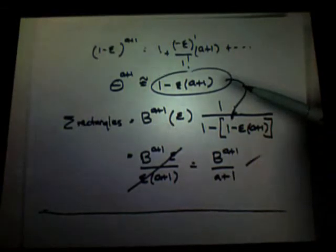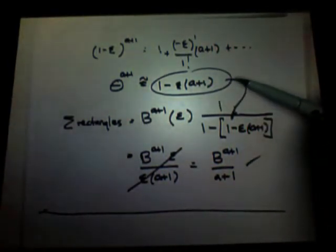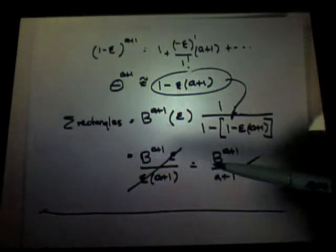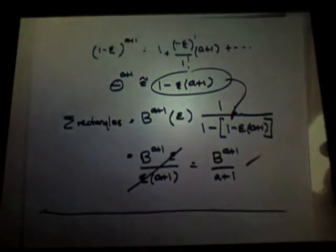But if epsilon is small, epsilon squared is even smaller, right? So within any desired accuracy, let epsilon go to zero. And basically, he was anticipating an awful lot. And maybe if he hadn't been a lawyer and had been a full-time mathematician, he would have been famous. He was certainly integrating power functions, rather general ones.